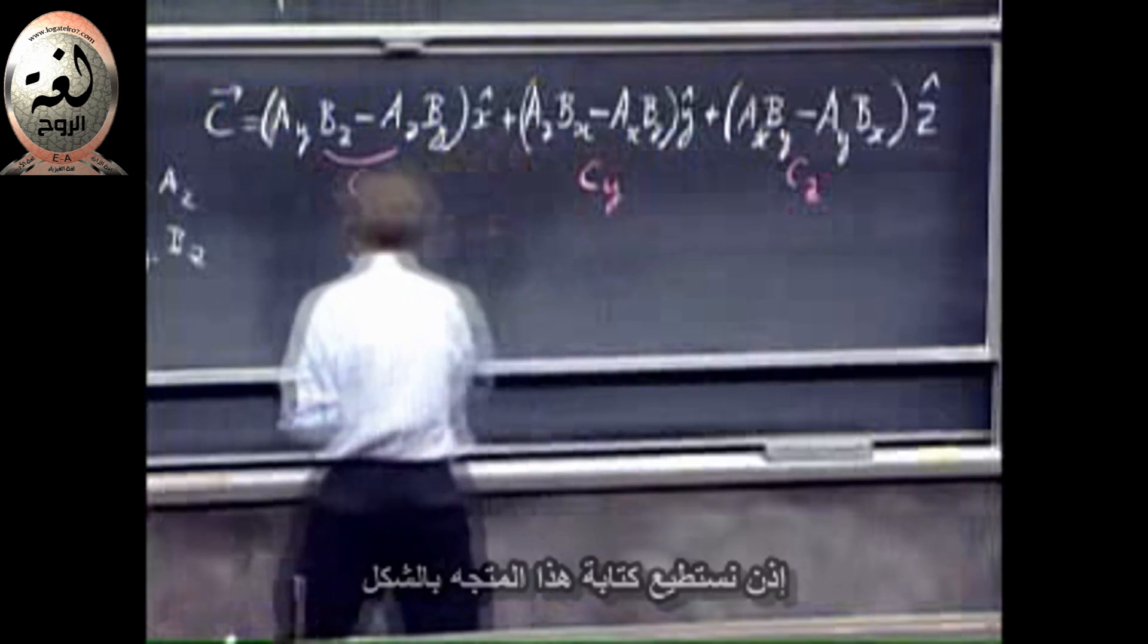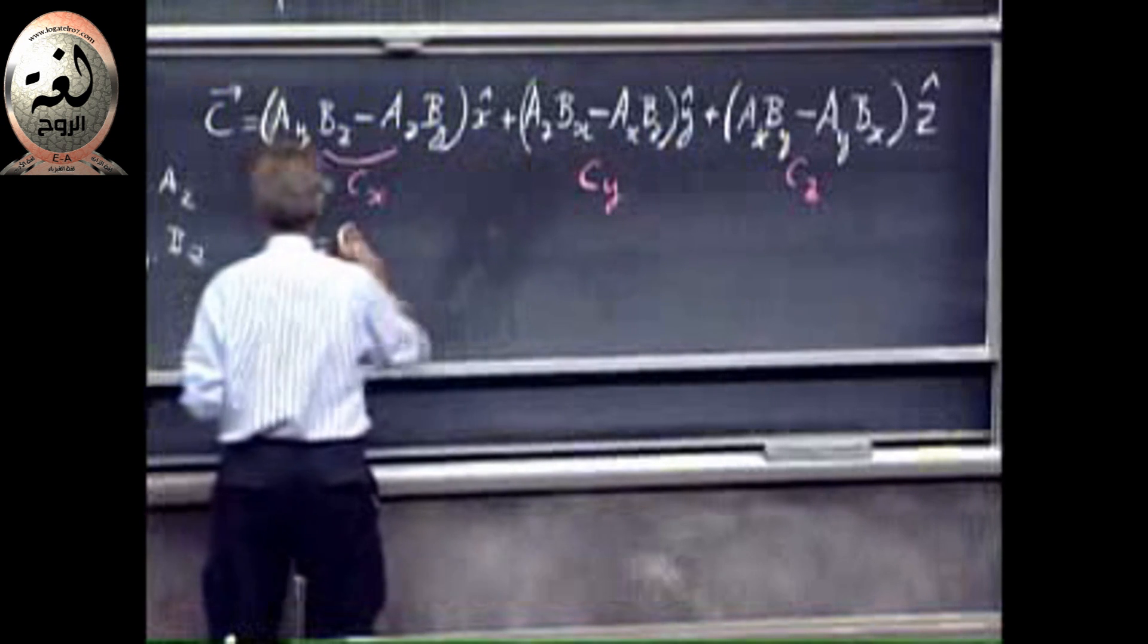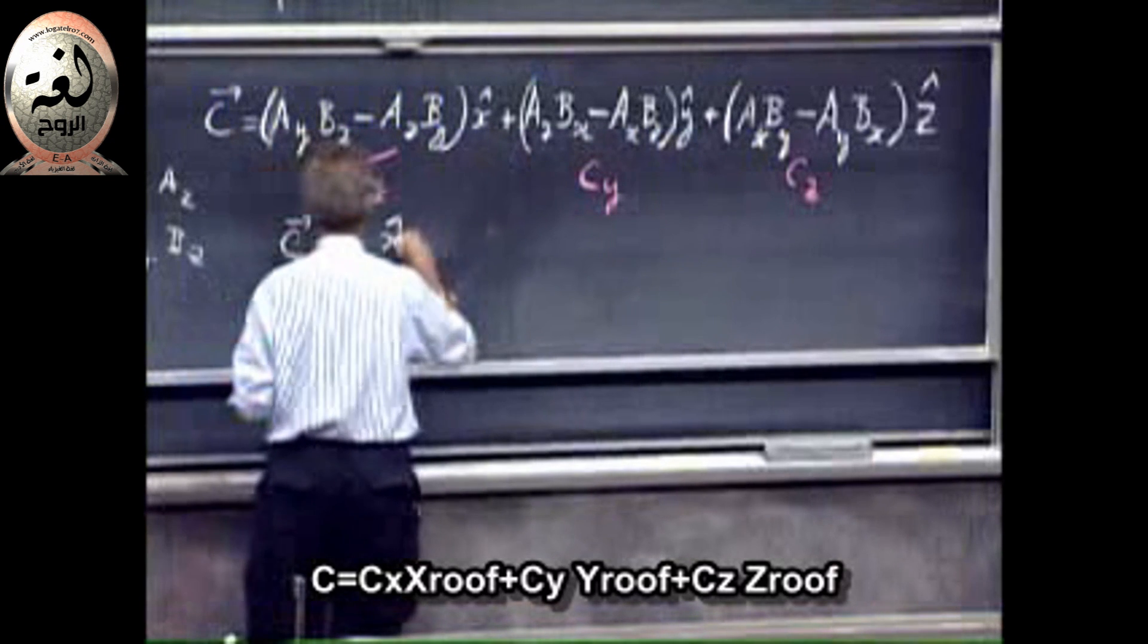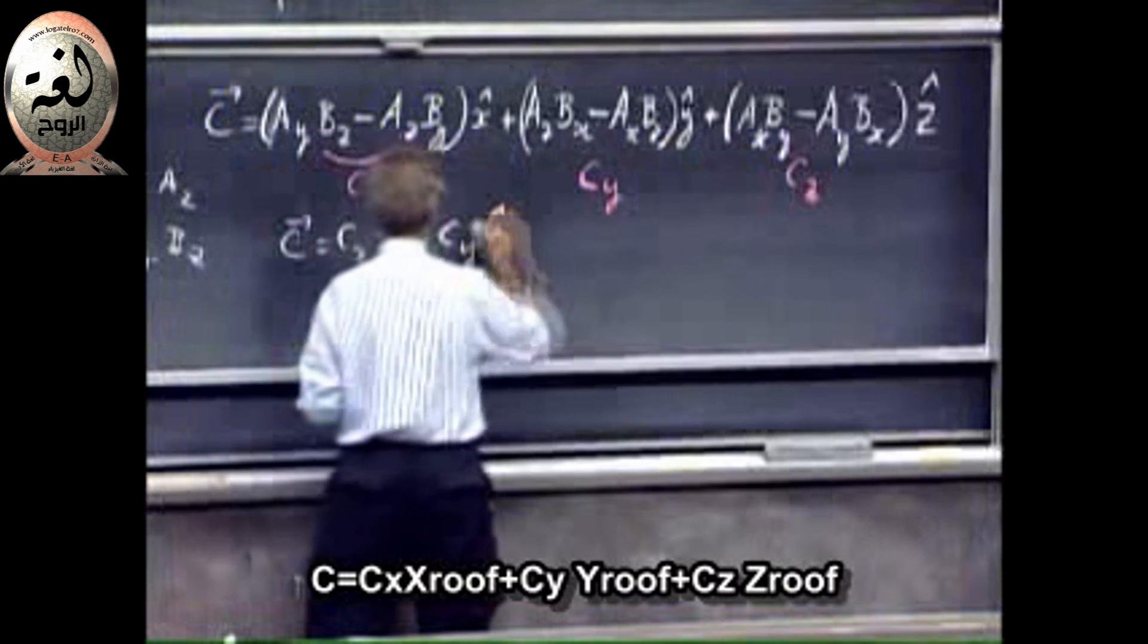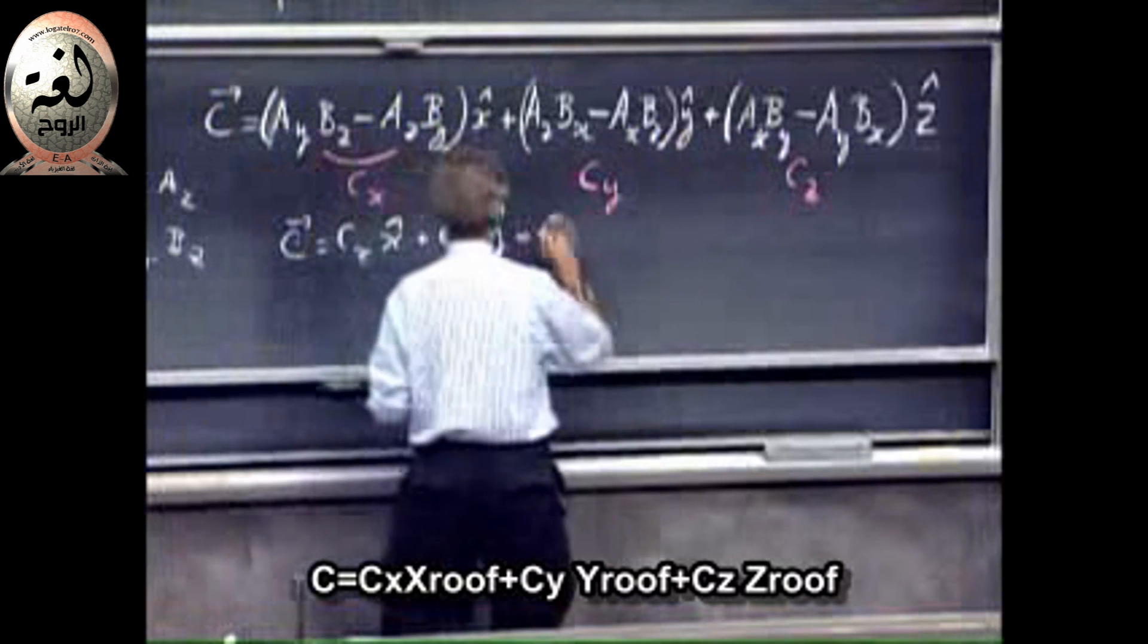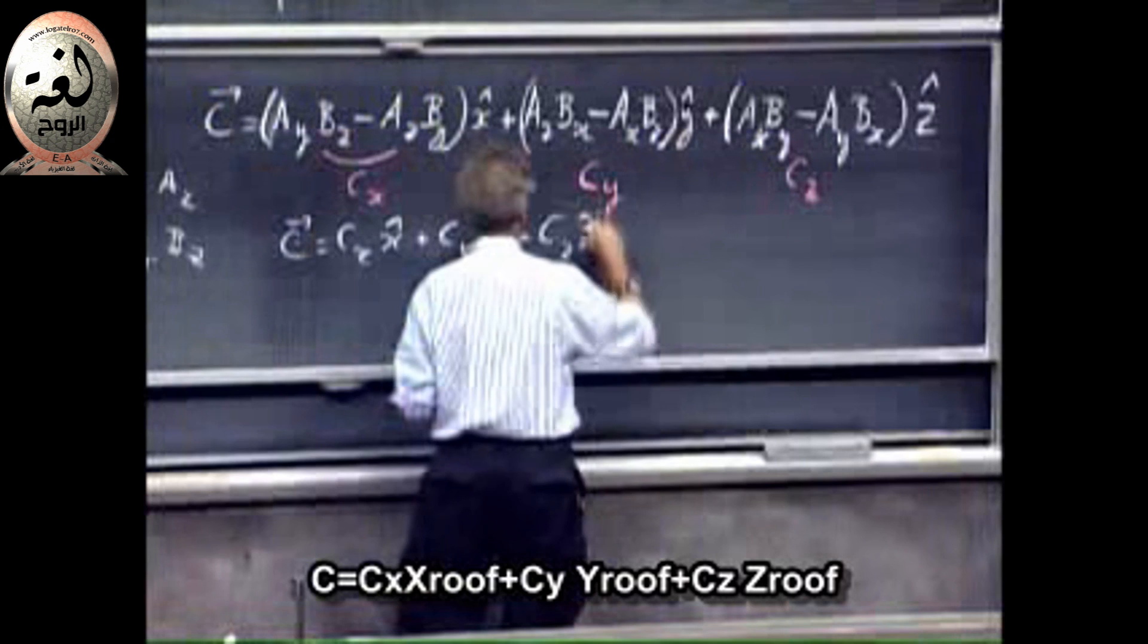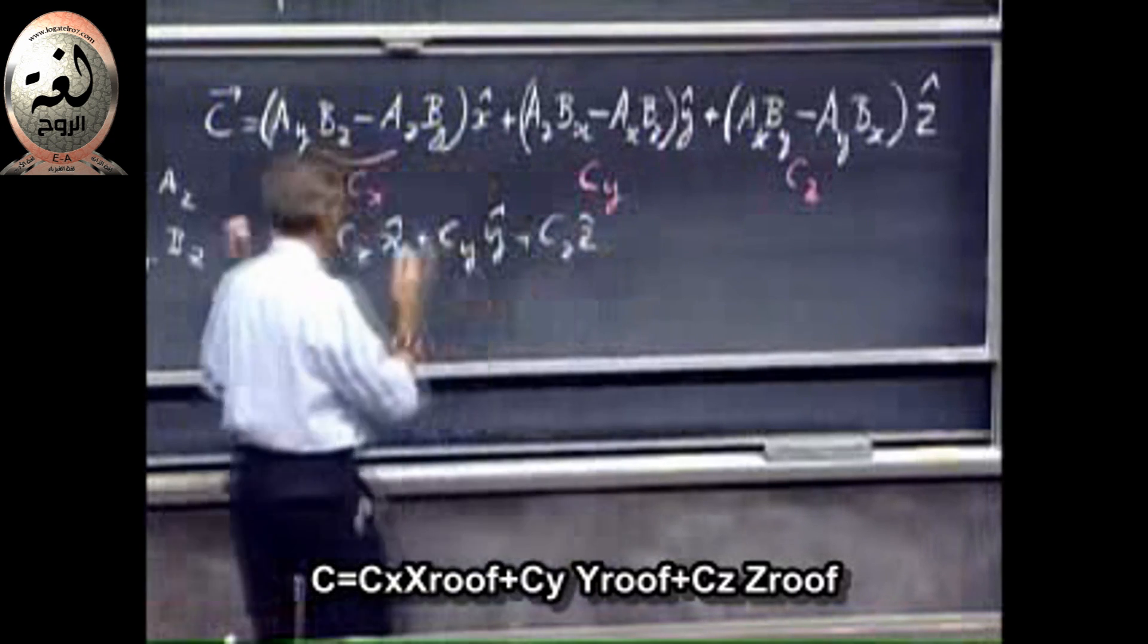So you can also write that vector then that C equals C of X, X roof, plus C of Y, Y roof, plus C of Z, Z roof. It's the cross product of A and B.